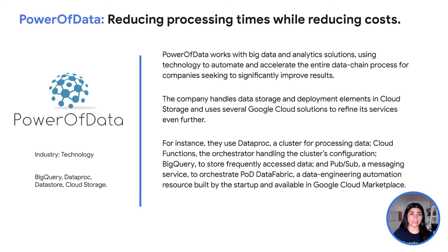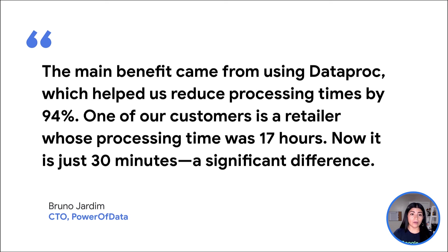Now let's talk about one of our customers and how Dataproc has allowed them to reduce processing times while reducing costs. Power of Data works with big data and analytic solutions, using technology to automate and accelerate the entire data chain process for companies seeking to significantly improve results. The company handles data storage and deployment elements in cloud storage and uses several Google Cloud solutions. They use Dataproc. Bruno Harding, the CTO of Power of Data, told us that the main benefit came from using Dataproc, which helped Power of Data reduce processing times by 94%. One of their customers, a retailer whose processing time was 17 hours, is now just 30 minutes — a significant difference that translates into time and cost savings.